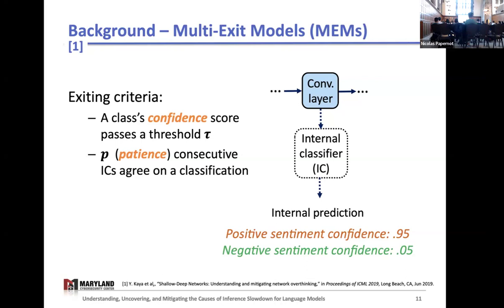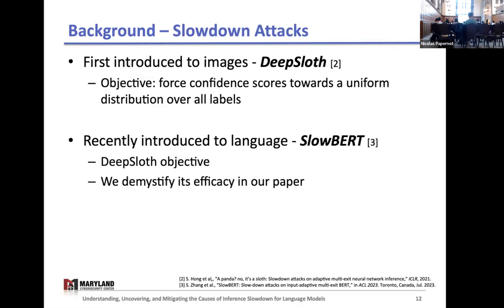These types of models can save us in cost, but as I showed earlier, they're also vulnerable to slowdown attacks, so an input that should be able to exit early can be attacked so that it has to exit later. This concept of a slowdown attack is very new. It was first introduced to the image domain in 2021 with the deep sloth paper, and recently introduced to text with the first text-based slowdown attack, the slow bird attack, published just last year. Both attacks have a similar objective: the aim is to force each IC's confidence scores towards a uniform distribution across all labels. With the sentiment classification example, that would be 0.5 for positive and 0.5 for negative, so the model can never be certain enough towards one class or the other to allow for early exiting—it's essentially confused the whole time.